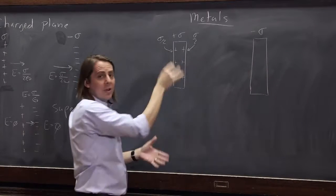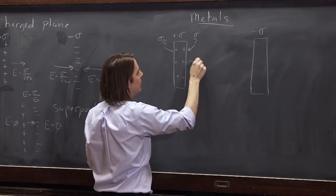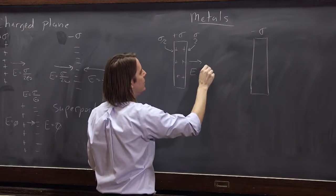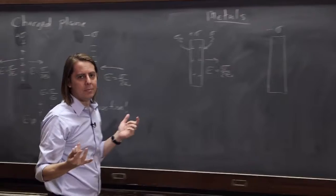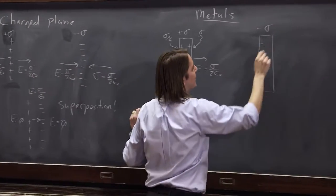Therefore the field outside this large piece of metal is also E equals sigma over two epsilon naught. So it's the same thing, same thing happens over here.